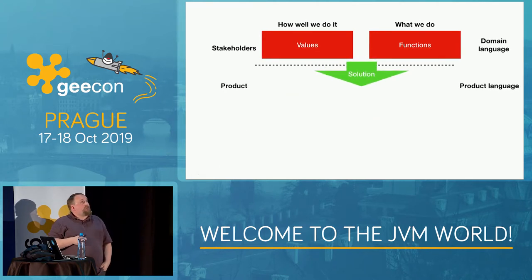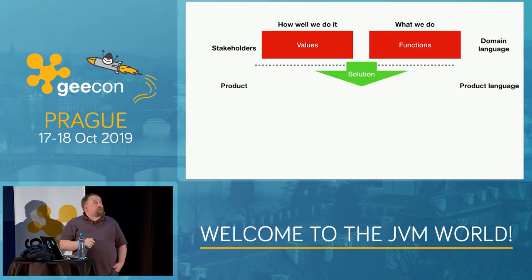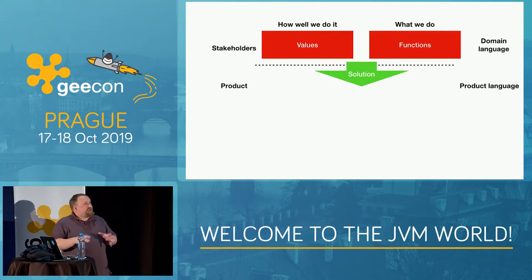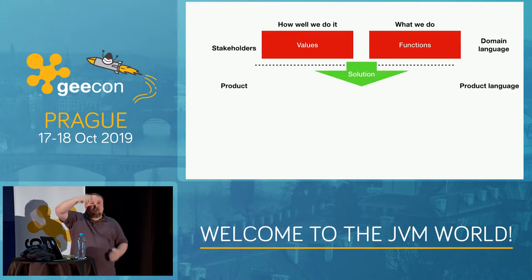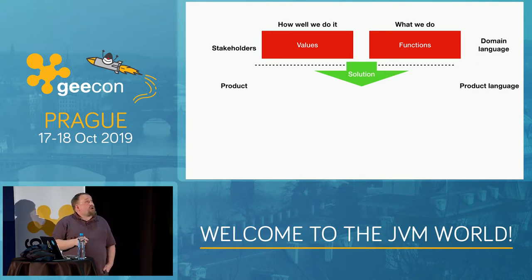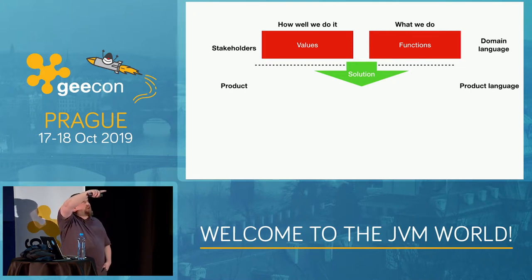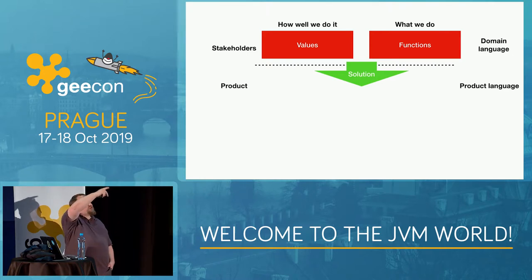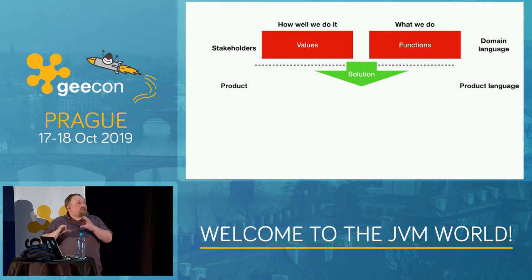There are several important axes in this picture. One is distinguishing between values and functions. A lot of product managers tend to think functions are the most important thing — the longer the feature list, the better. But with software architecture the other half is just as important. Functions are what the system does; values or qualities are how well the system does it. Another important thing is to distinguish between what's requested — functions and values — and how it's actually delivered. Solutions should be kept apart from requirements, which is sometimes harder than it seems.